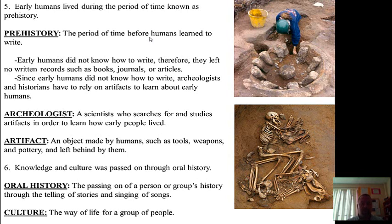Since early humans did not know how to write, archaeologists and historians have to rely on artifacts to learn about these early humans. An archaeologist is a scientist who searches for and studies artifacts in order to learn how early people lived. If you look at the picture on the top here, the person digging in the ground is an archaeologist. An archaeologist goes out into the field, searches for places where early people may have lived, and tries to dig things up from the ground. Probably the most famous archaeologist you know is the movie character Indiana Jones — that's kind of what archaeologists do.